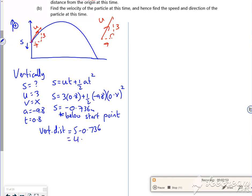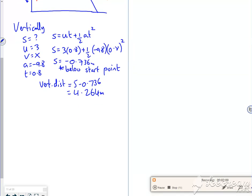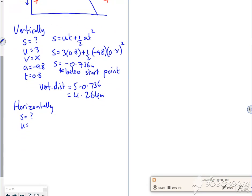So it would be 4.264 metres high. So let's look horizontally then. So horizontally, s I don't know, u is 7.